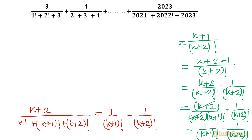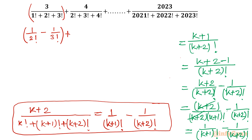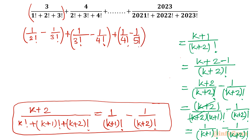So the general term simplifies to 1/(k+1)! − 1/(k+2)!. This is our result and it will give our simplification for this problem. For the first term, put k=1: 1/2! − 1/3!. Second term (k=2): 1/3! − 1/4!. Next term (k=3): 1/4! − 1/5!, and so on. The last term gives 1/2022! − 1/2023!.